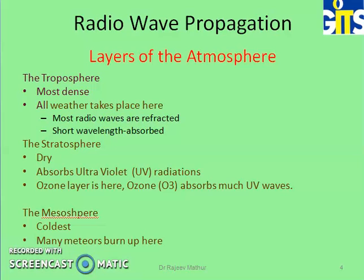The stratosphere is the second layer. It is very dry and absorbs ultraviolet radiation from the sun. The ozone layer is present here. The next layer is the mesosphere, which is the coldest layer because it is at a very great height above the earth's surface. Many meteors coming from outer space burn up here.